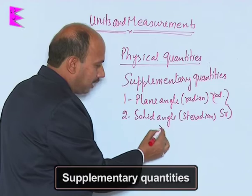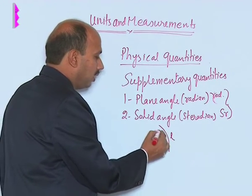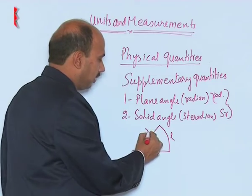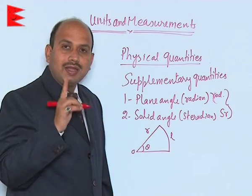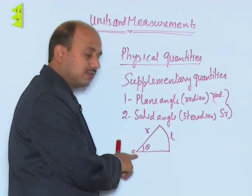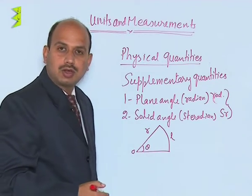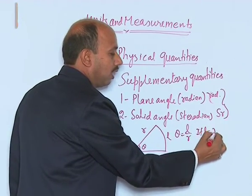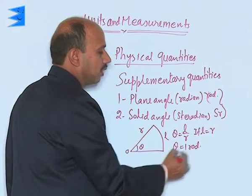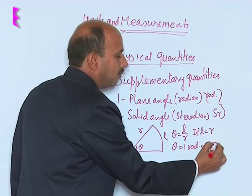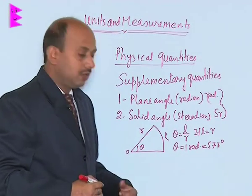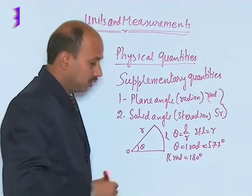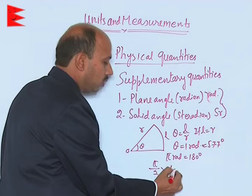What is a plane angle? If you have taken any arc whose length is l, and the angle subtended by this arc at the center is theta, and the radius is r, then one radian is that angle subtended by an arc at the center whose length is equal to the radius of the circle. We can write theta equal to 1 radian, and 1 radian is equal to 57.7 degrees. Similarly, pi radian is equal to 180 degrees, and pi by 2 radian is equal to 90 degrees.